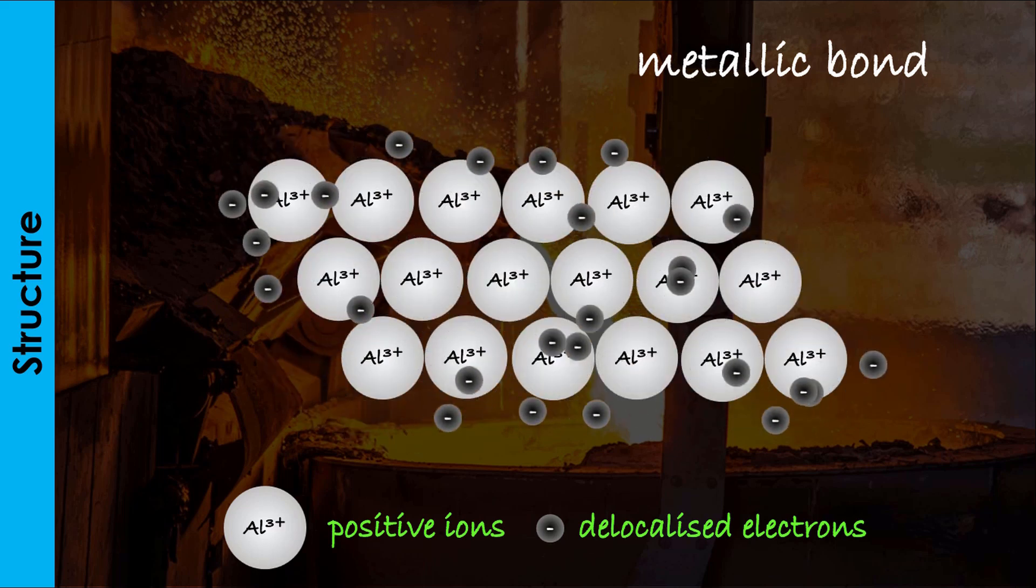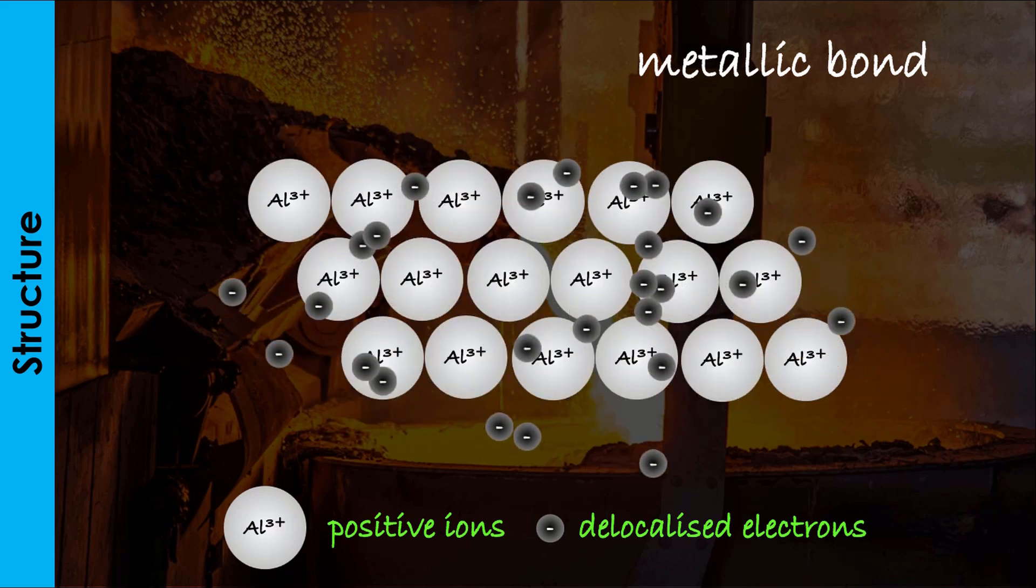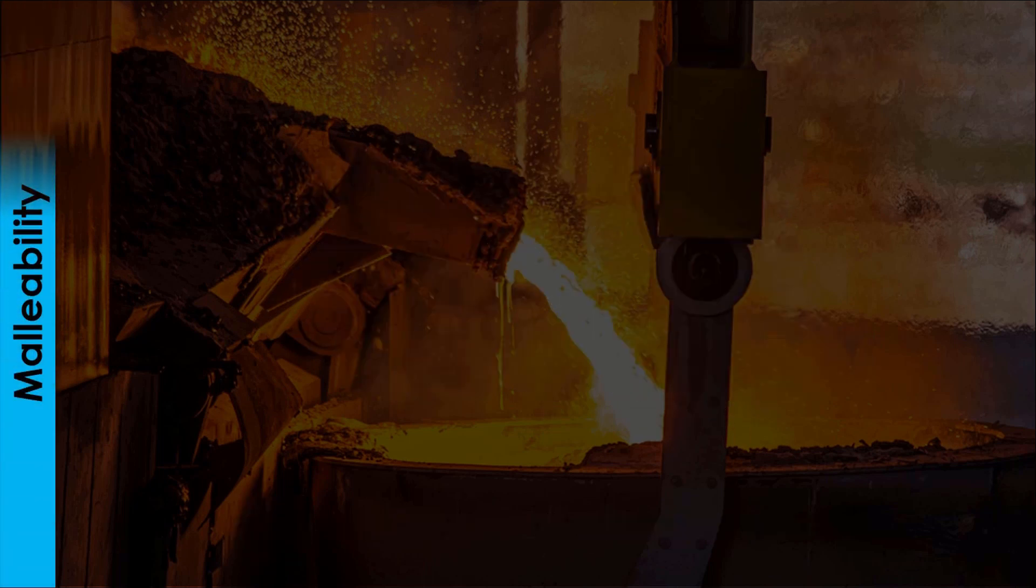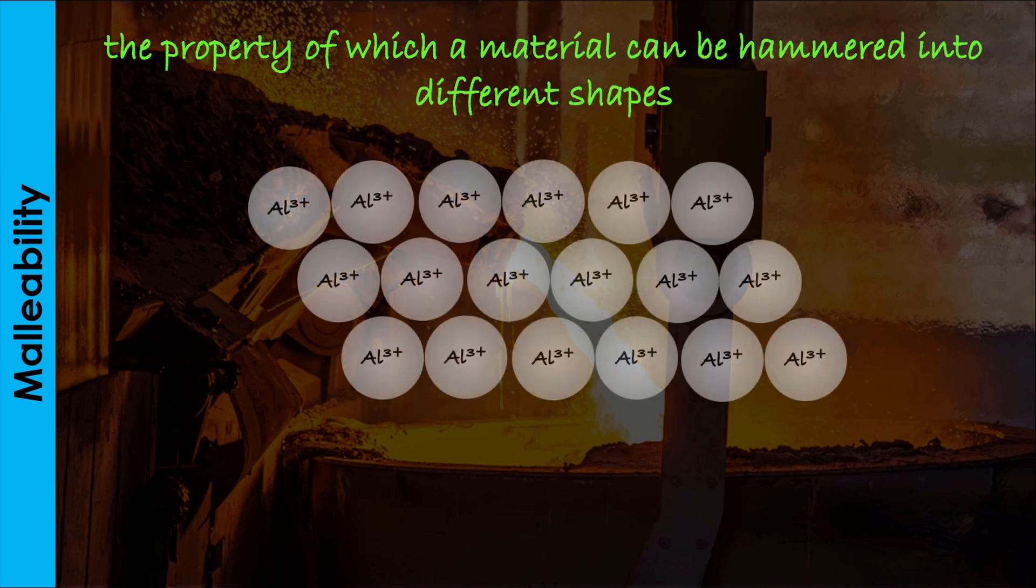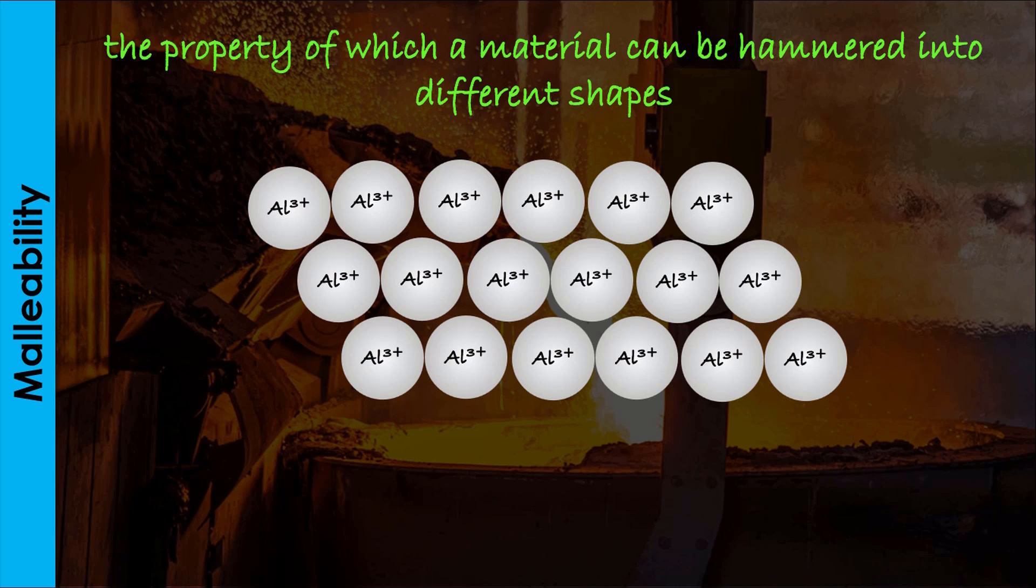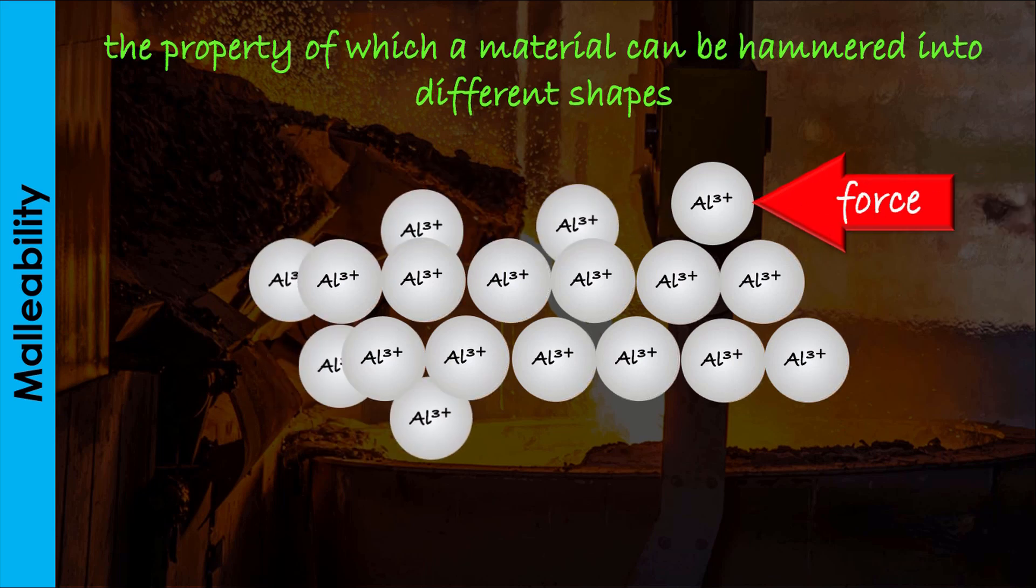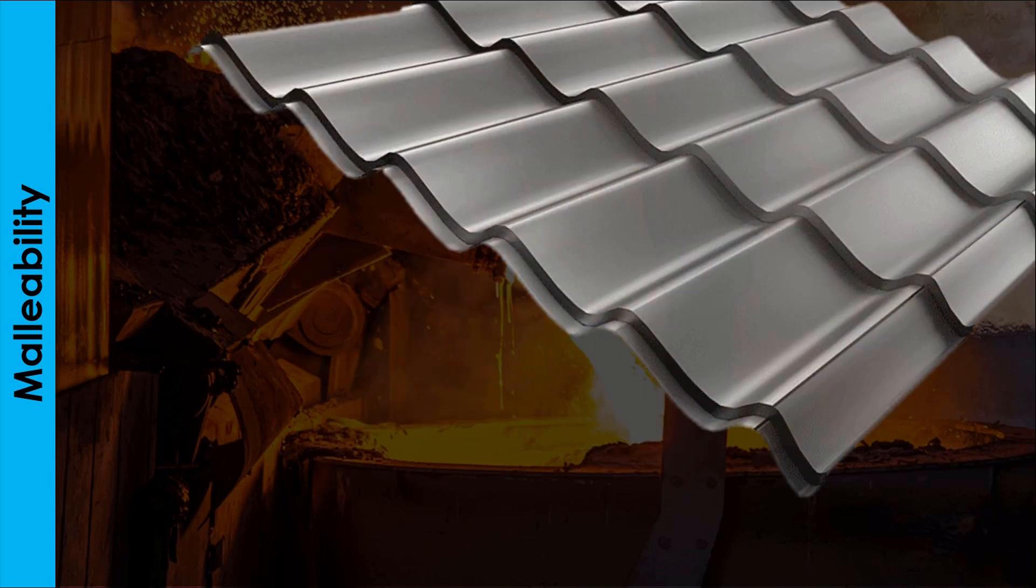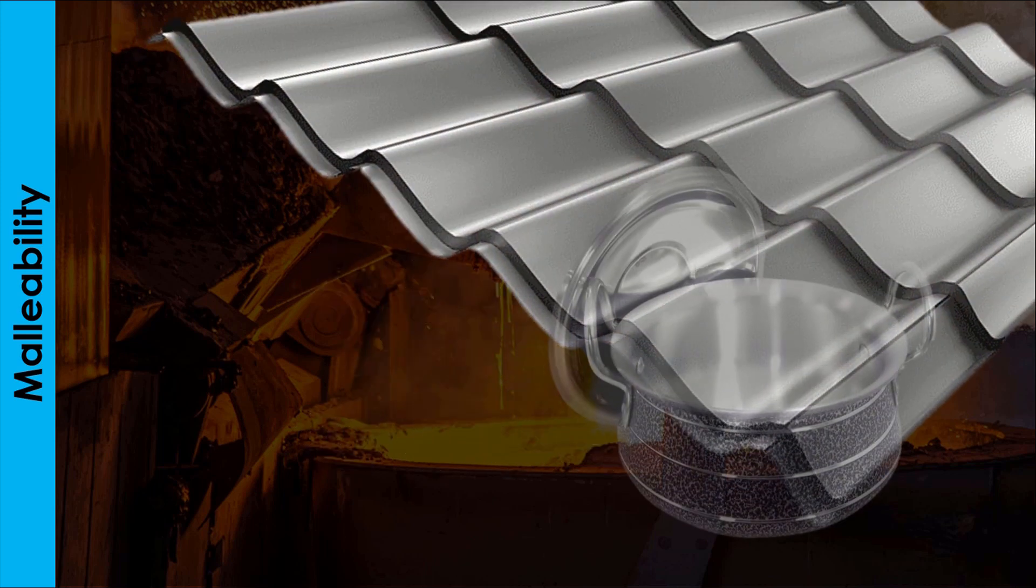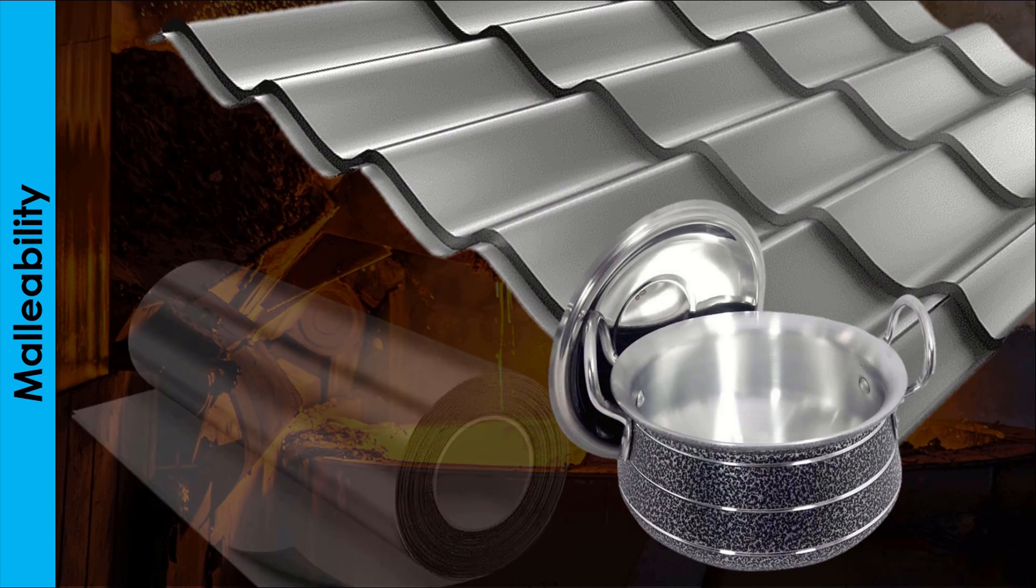Other physical properties of aluminum are based on this structure. Malleability is the ability of a material to be hammered into different shapes. For aluminum, the layers of its atoms easily slide over one another when a force is applied to it without destroying its crystal lattice. This property is one of the reasons why it is used for making roofing sheets, cooking pots, kettles, and foils.